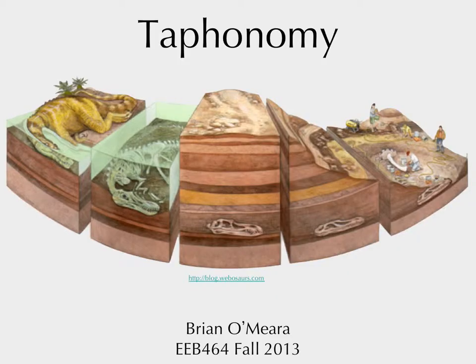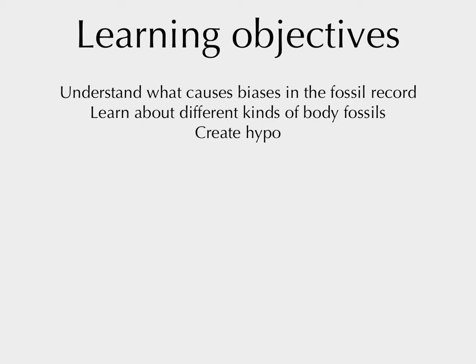Okay, so taphonomy. Here we see the process of something dying and then becoming a rock — a fossil. Learning objectives for today: understand what causes biases in the fossil record, learn about different kinds of body fossils, and create a hypothesis about other biases.